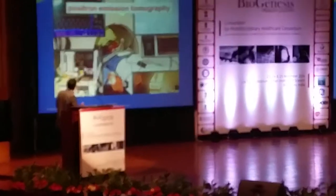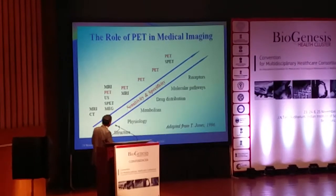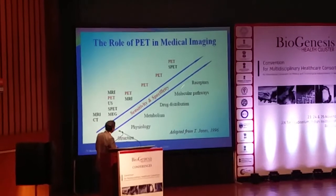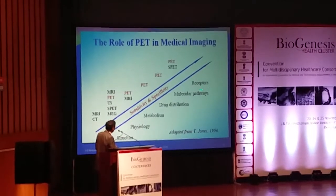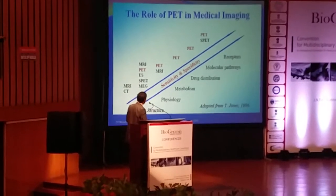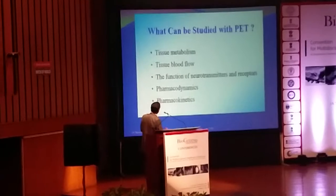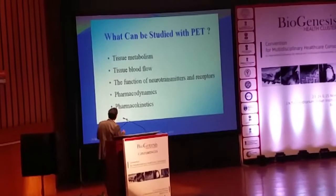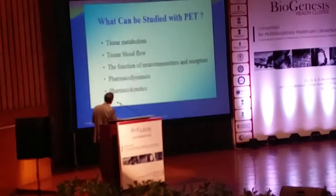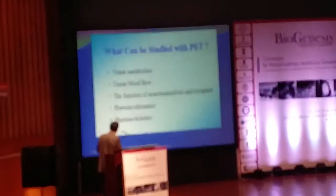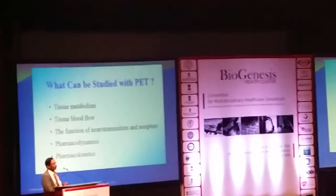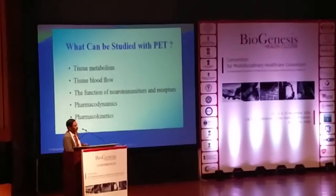Coming to PET scan — this is very important for its sensitivity and specificity. PET scan is sensitive for identifying detection, molecular pathways, drug distribution, metabolism, physiology, and structure. One can use PET scan in very early drug development to find out tissue distribution, tissue blood flow, function of neurotransmitters, pharmacokinetic effects, and pharmacodynamic effects. Many centers now very commonly use PET scan in the very early stage of drug development.